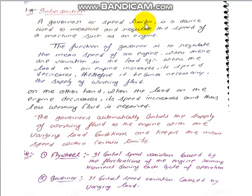A governor is a speed limiter — similar to a flywheel. The flywheel controls speed, and the governor also controls speed, but both operate under different conditions. A governor is a device used to measure and regulate the speed of a machine, such as an engine.